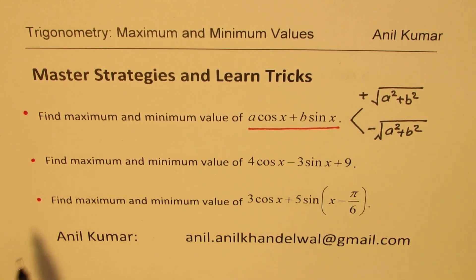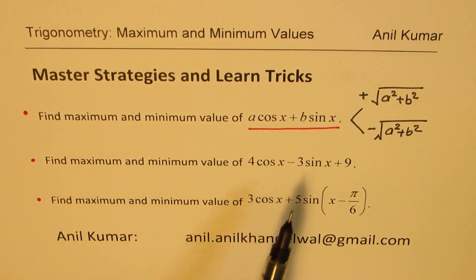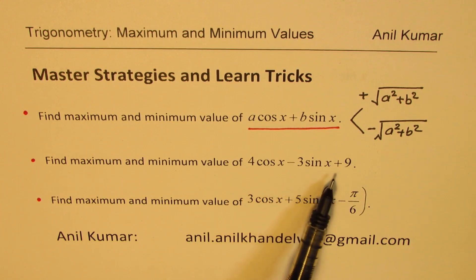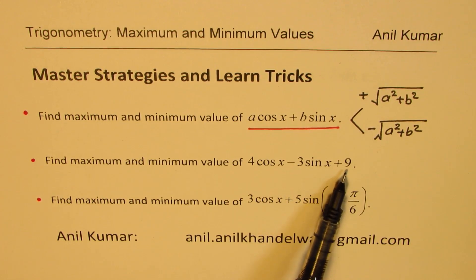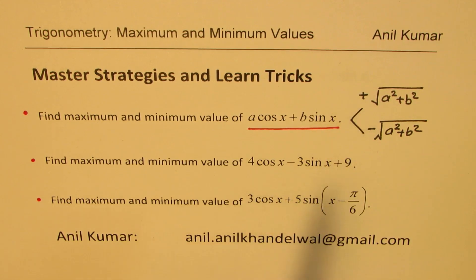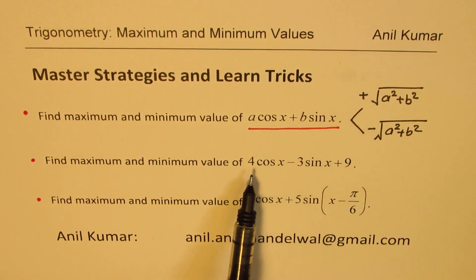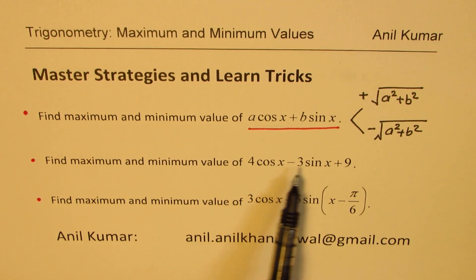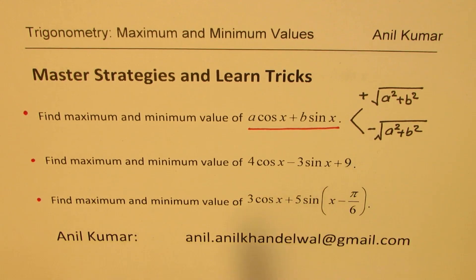Now in part B and C, we have made slight changes. As you've seen, we have added 9. So this number will be 9 plus or minus square root of 4 squared and 3 squared, which is 5. So you get your result — straightforward.